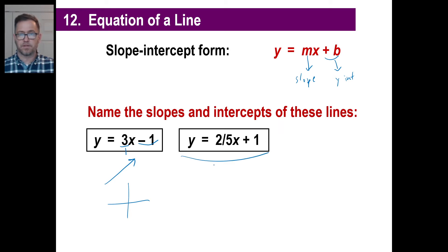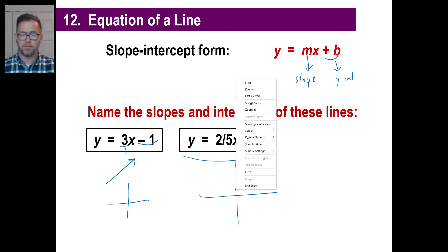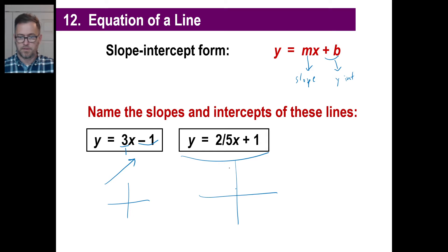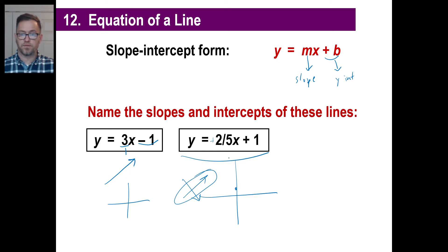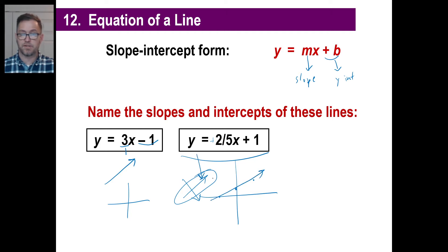It's positive one. So immediately you could look at this and go, okay, it's going to be positive one right there. That's going to be my y-intercept. Two-fifths — first off, is this pointing like this or like this? It's pointing like this because it's a positive two-fifths. So we're going to go up two or down two. If we go up two, we go over five like this.